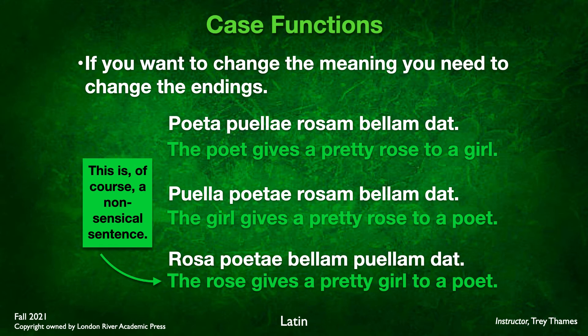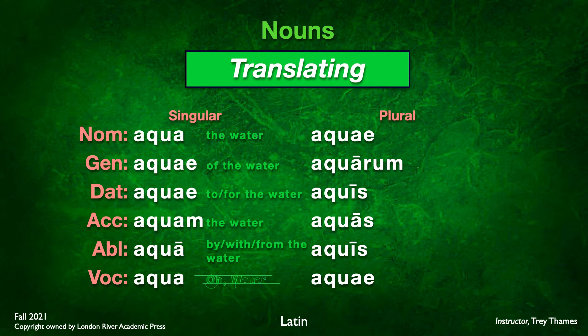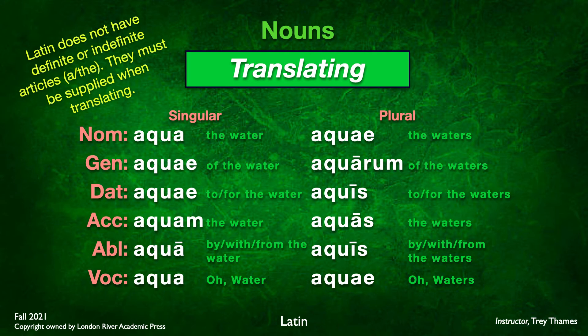That's how noun case functions in a sentence. To translate: if it's the subject, just say the noun — 'the water.' Genitive: 'of the water.' Dative: 'to or for the water.' Accusative: 'the water' again, as in 'he drank the water.' Ablative: supply the prepositions 'by, with, or from the water.' Vocative: 'O, water!' — like you're calling to the water.